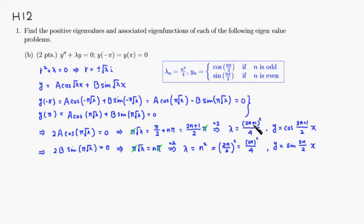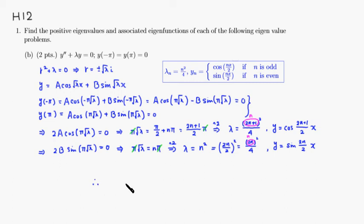Notice that here 2N plus 1 is odd, and separately 2N is even. What the textbook did was instead of using 2N minus 1 or 2N plus 1, they relabeled: they call the odd case N and the even case N as well. So 2N is an even number, and therefore we can write one expression for lambda sub N, which is N squared over 4.